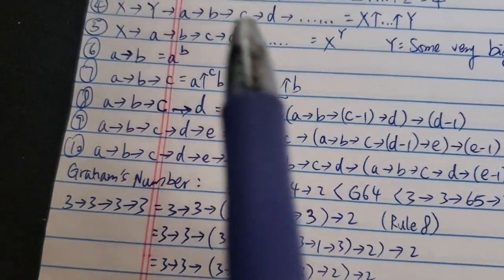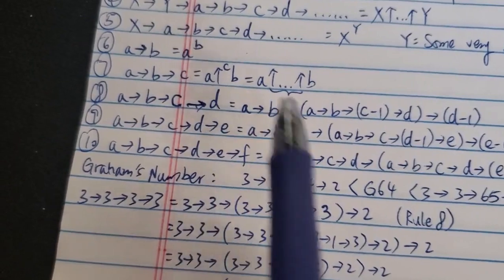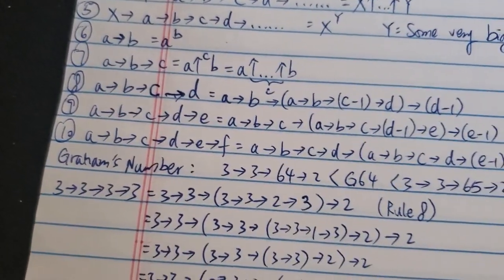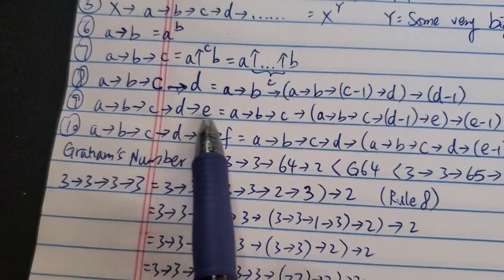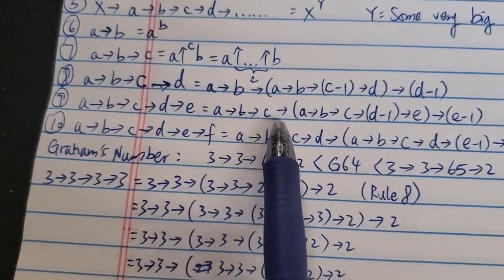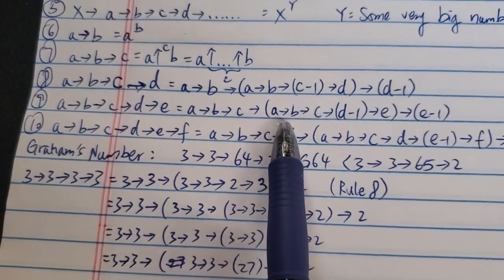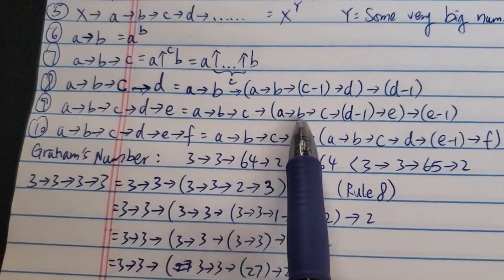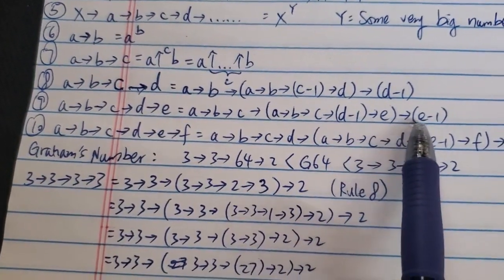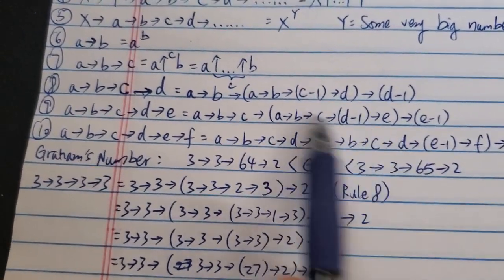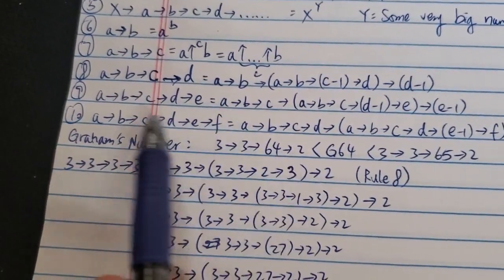And then a lot of people ask me, what is five entry or six entry or more? It's just the same idea, as you can see here. A→B→C→D→E is just equal to A→B→C→...→(A→B→C→(D-1)→E)→(E-1). So you can see the pattern here, same thing for six entries. So A→B→C→D→E→F is just equal to A→B→C→D→(A→B→C→D→(E-1)→F)→(F-1).